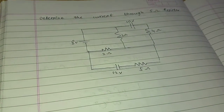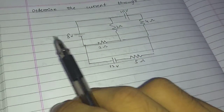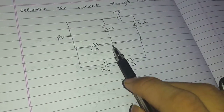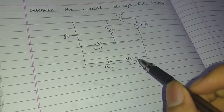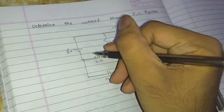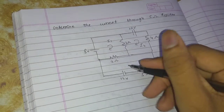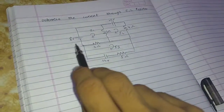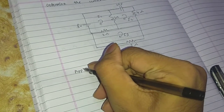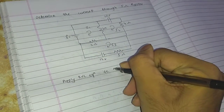Let's talk about determining the current through the 5 ohm resistor. We will apply mesh analysis. We need to calculate the meshes — this is mesh 1, mesh 2, mesh 3. I will assume currents I1, I2, and I3 for each mesh respectively. Now I will write the equation for mesh 1 by applying KVL.